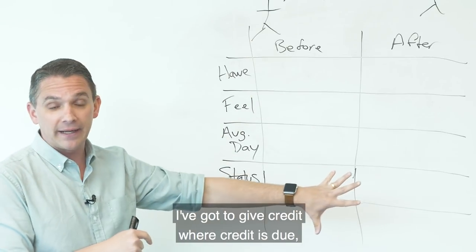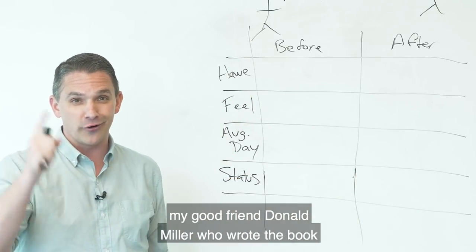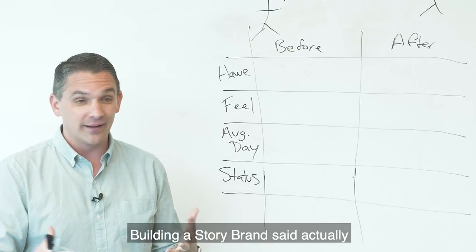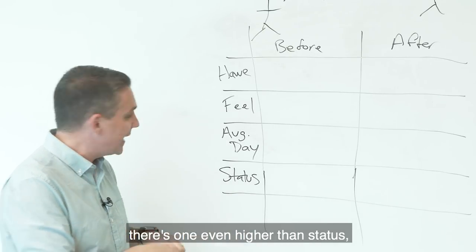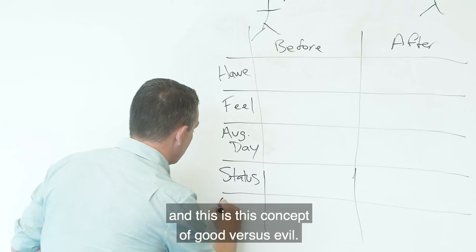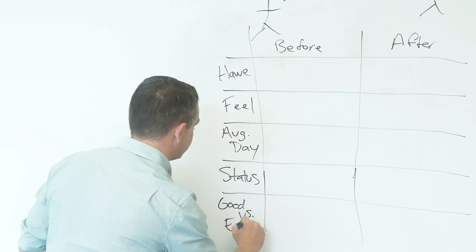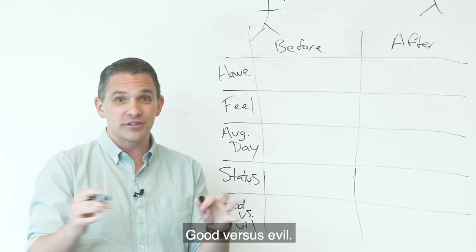I used to believe that status was the most powerful of all. That's where this grid used to stop. I got to give credit where credit's due. My good friend, Donald Miller, who wrote the book Building a Story Brand said, actually, there's one even higher than status. And this is this concept of good versus evil. Good versus evil.